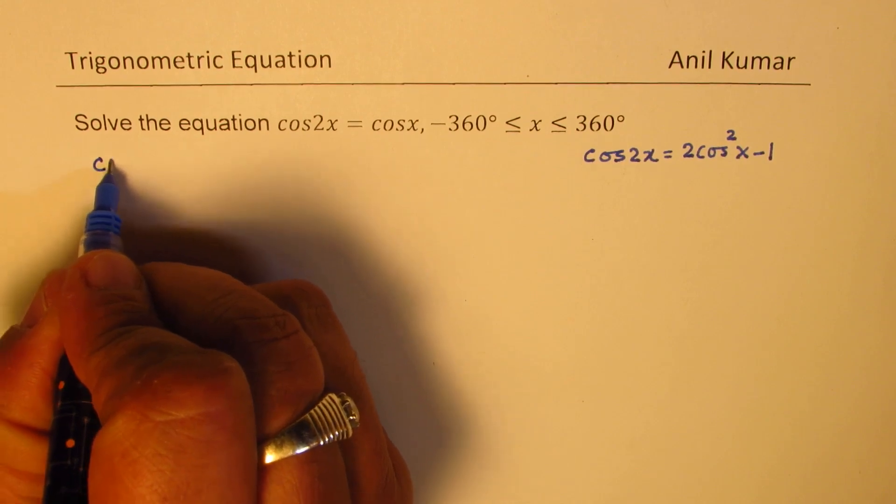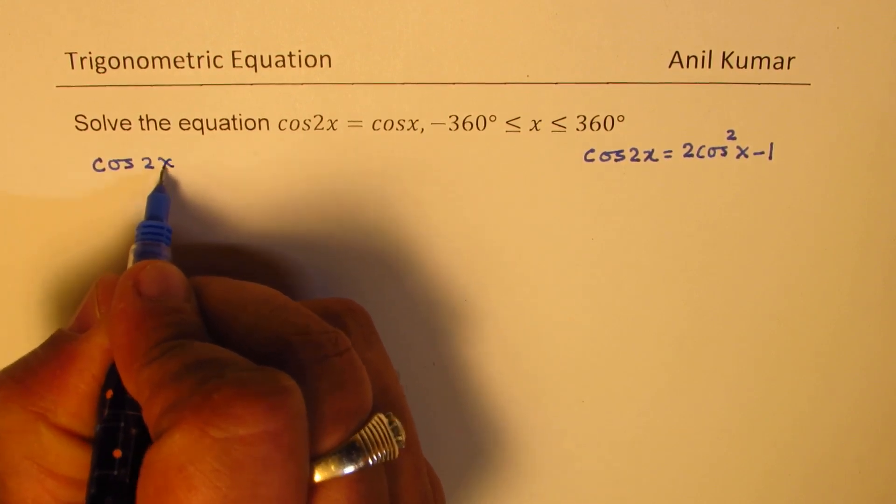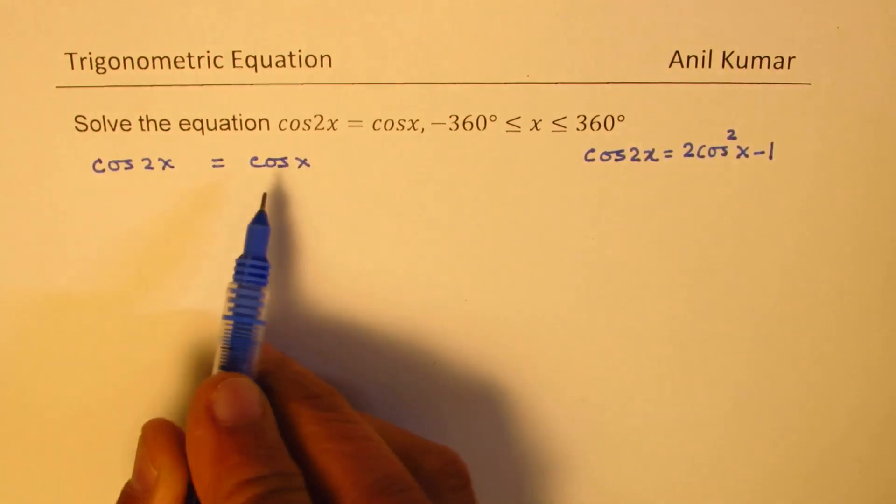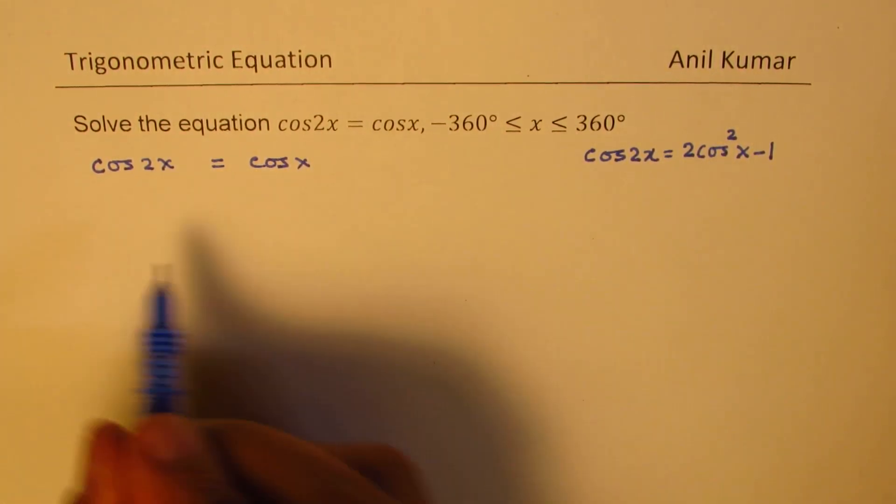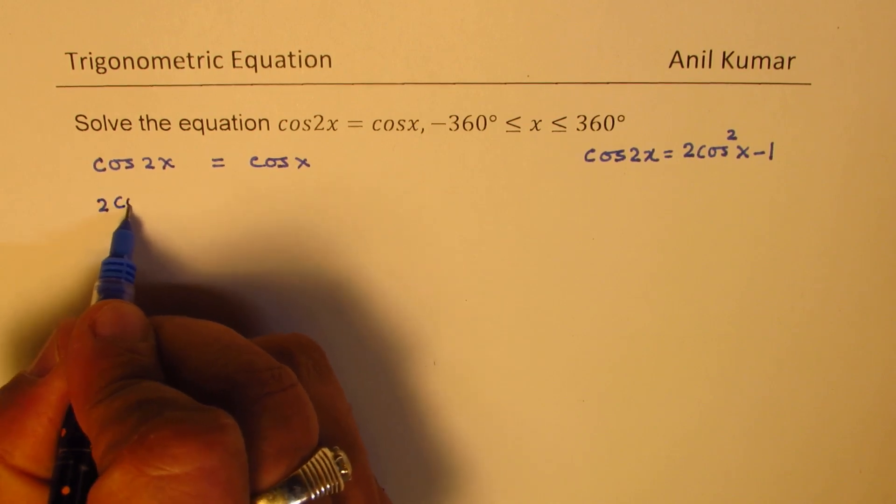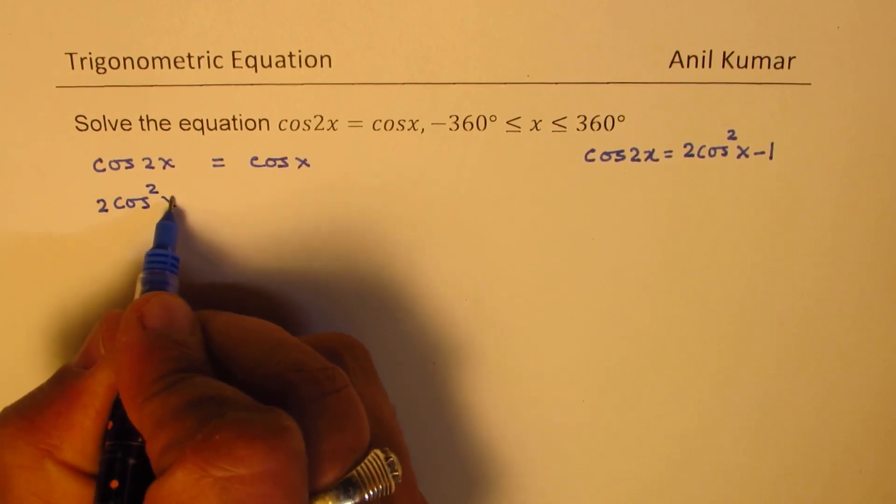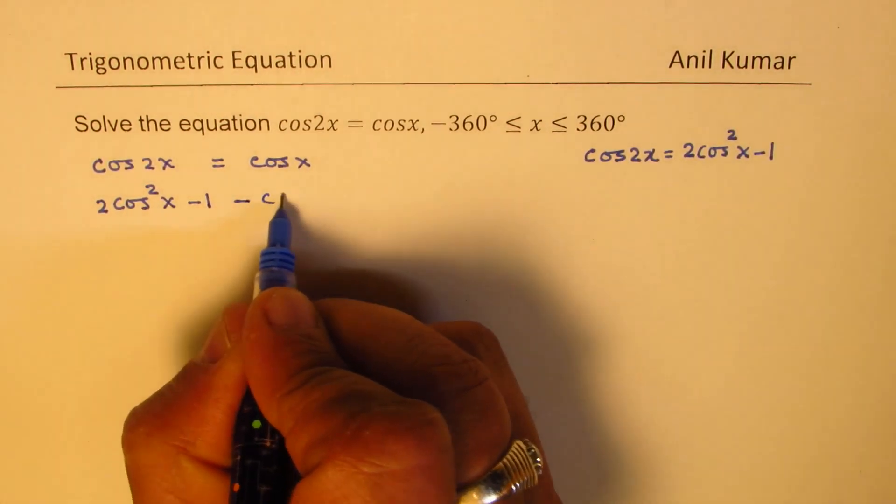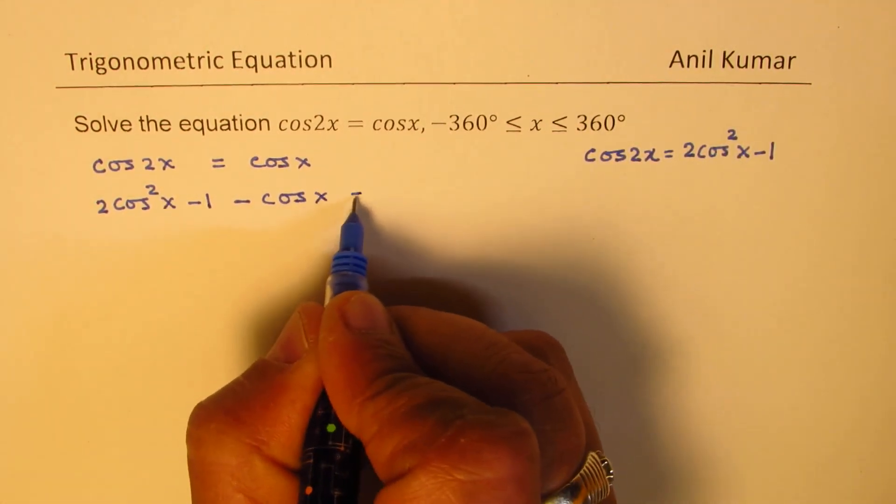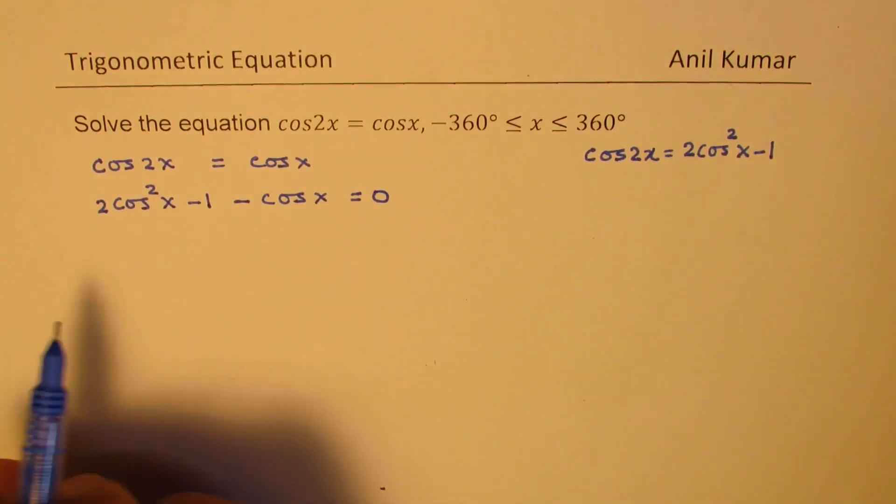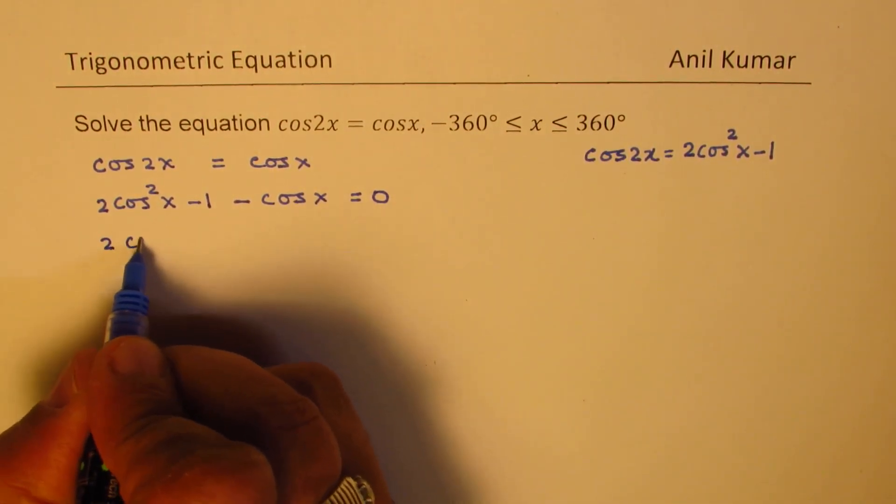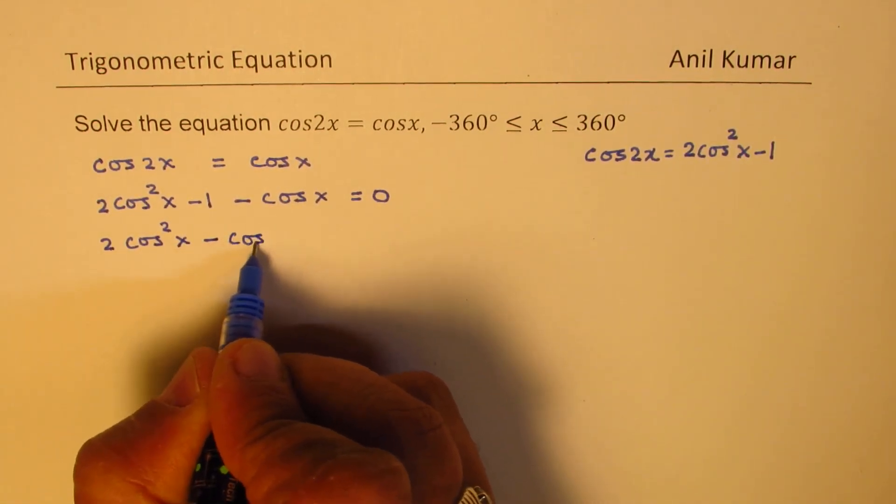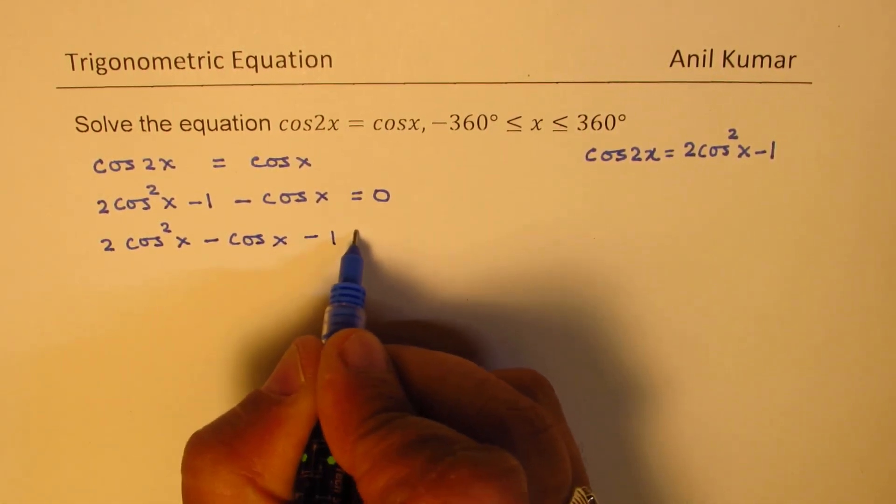So the equation cos 2x equals cos x can be written as cos 2x. We will write this as 2 cos squared x minus 1. And we will bring cos x to the left side. So we get minus cos x equals 0. Now let's rewrite this. We have 2 cos squared x minus cos x minus 1 equals 0.